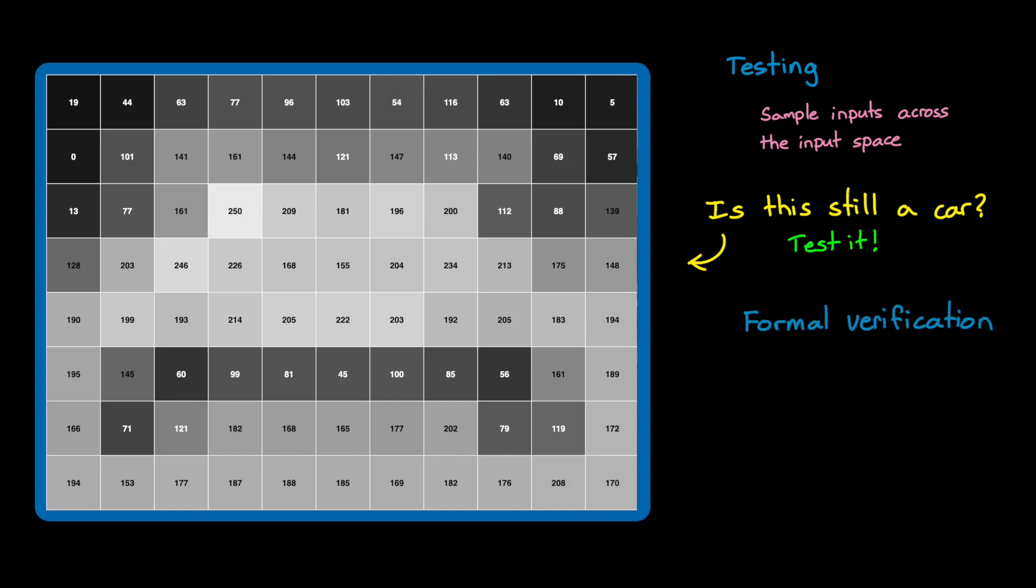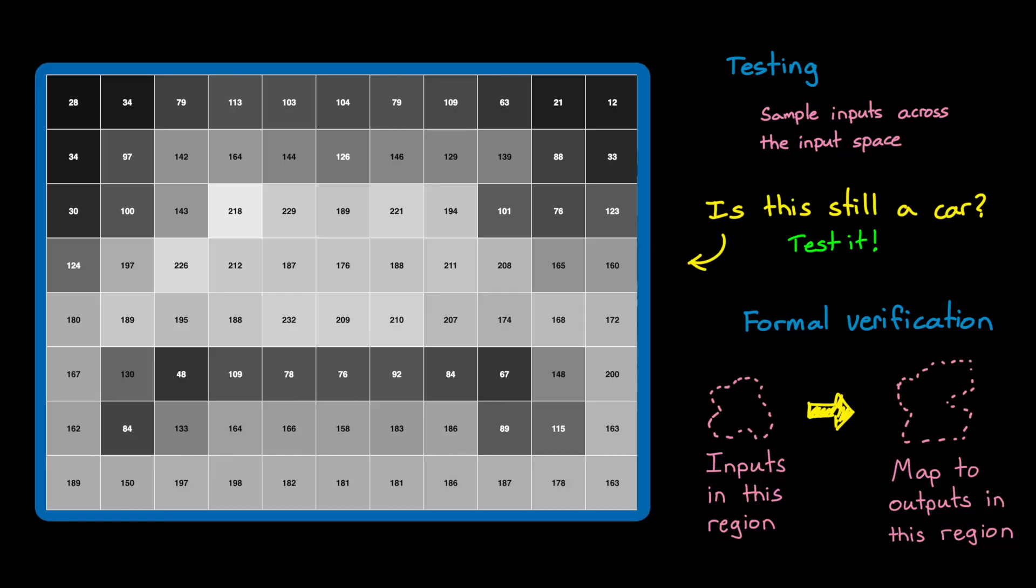And that's where formal verification comes in. Instead of testing inputs one by one, we can mathematically prove that every input within a specified region maps to outputs that all lie within a corresponding region. If that output region sits entirely inside the bounds of the behavior that we want, then we've guaranteed the network will behave correctly for all of those inputs. So in our driving example here, this means that we can prove the network will still classify the image as a vehicle even when the pixel values vary within the allowed range.